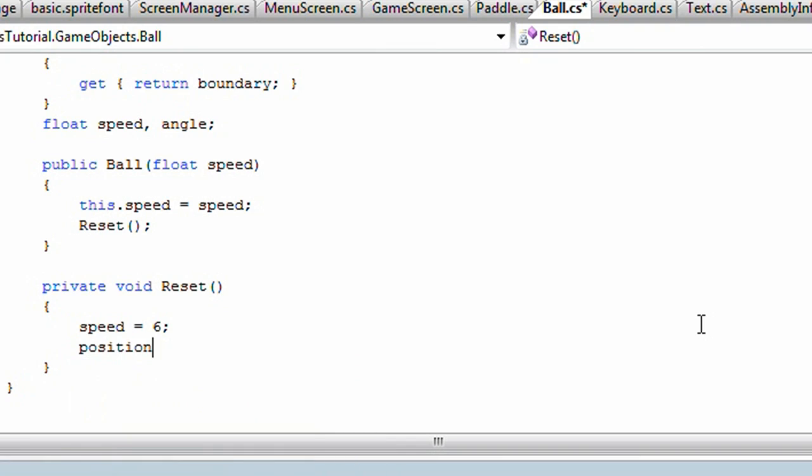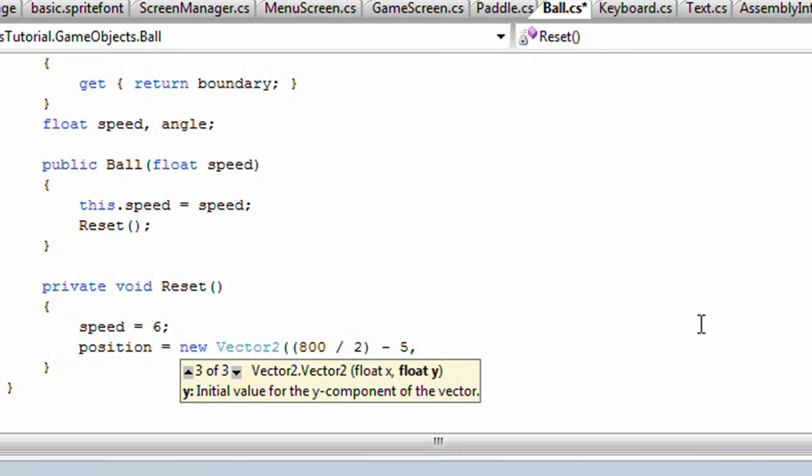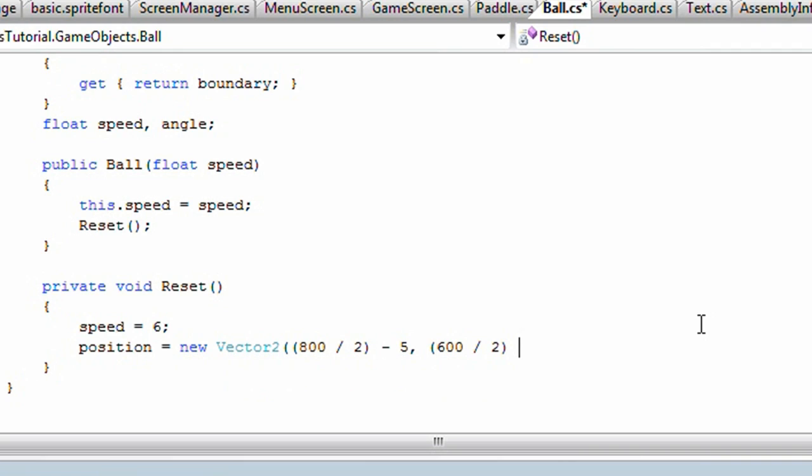We want to center the position. So in order to do that, we take 800 divided by 2, and we subtract 5, which is half the ball's width. And we'll do the same thing for the y-value, but it's 600 divided by 2, minus 5.